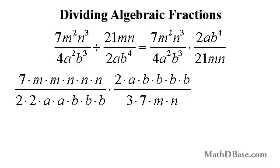Writing each term as a product of its factors, we have 7 times m times m times n times n times n over 2 times 2 times a times a times b times b times b, multiplied by 2 times a times b times b times b times b over 3 times 7 times m times n.